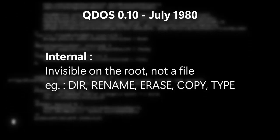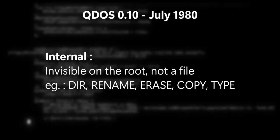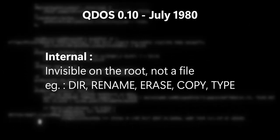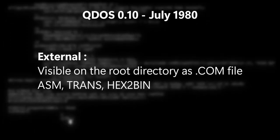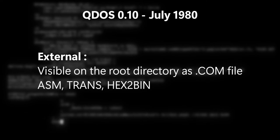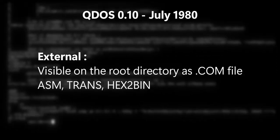Commands are split into two categories: internal, which is a command that isn't available in a root directory as a file — such as str, rename, erase, copy, and type — and external, which is a command that exists as a .com file in a root directory, such as ASM, Trans, and hex2bin. An unspecified bug was found in the build, resulting in a newer build, QDOS 0.11, which also never shipped outside of SCP.